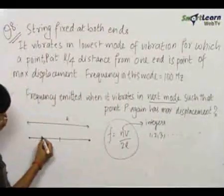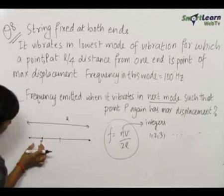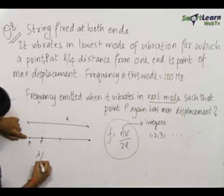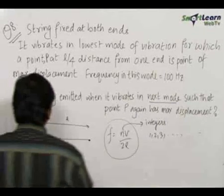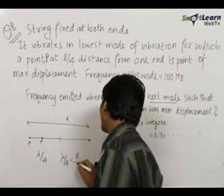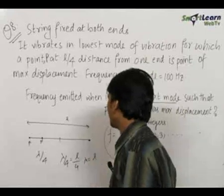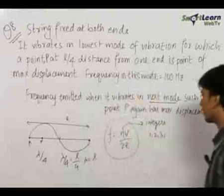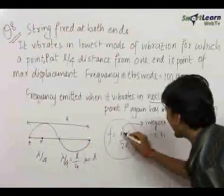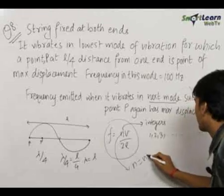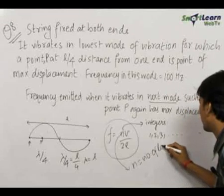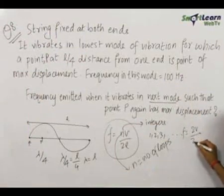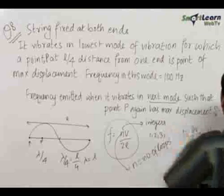For the lowest mode of vibration, P should be the first antinode. The distance of an antinode from the first node — that is, the fixed end — is λ/4. Therefore λ/4 = L/4, which gives λ = L. So the string is vibrating with 2 loops, meaning N = 2. The frequency equals 2v/2L = v/L, and this is given to be 100 Hz.